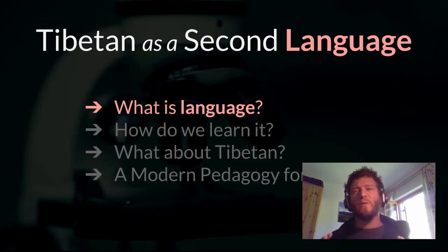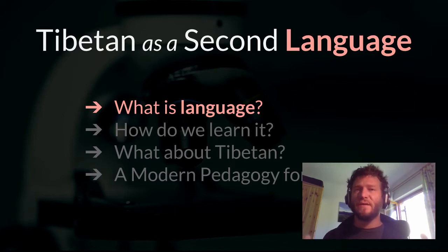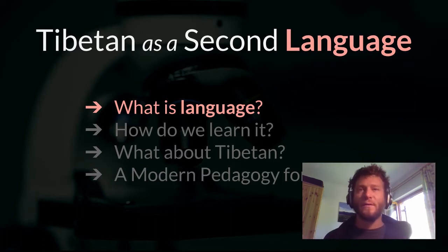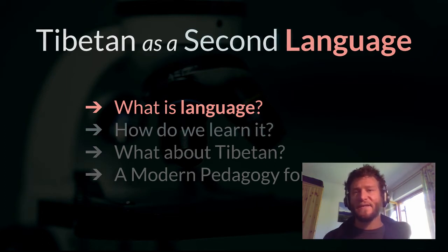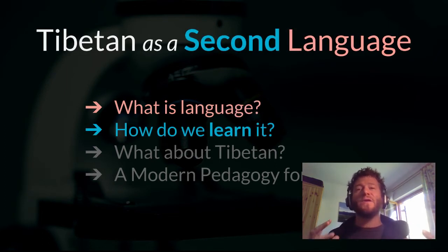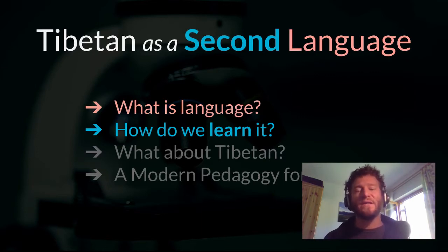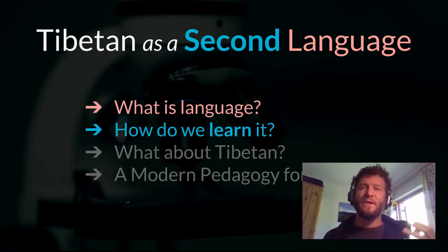We want to start with the very big picture. For teaching a language, it's very useful to know what a language is in general — how it works, what it's used for, things like that. Next we want to ask ourselves: how do human beings acquire a language? How do we learn it? And specifically, what's the difference between learning your first language and learning a second one?